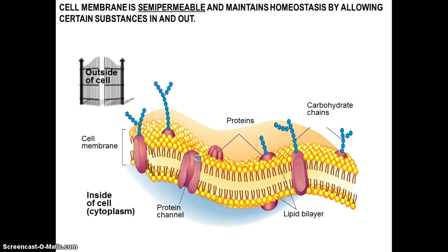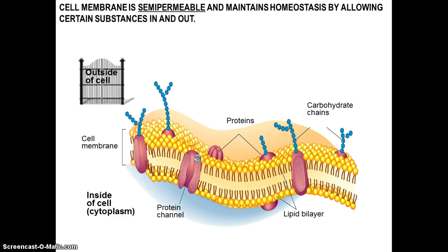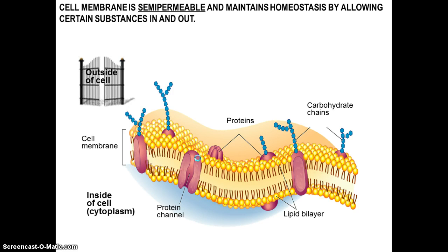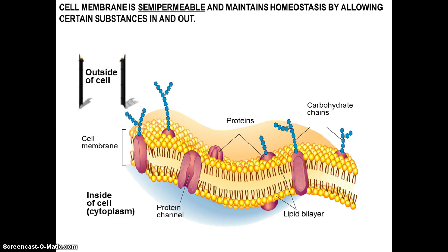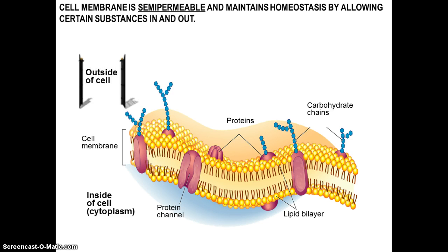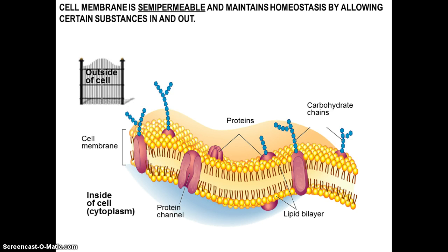Now, the cell membrane is what we describe as semipermeable, and the word semipermeable means it allows certain things to go in and out. Not everything can go in or out — only certain things. So this is how a cell membrane maintains homeostasis.